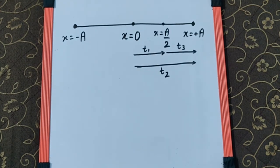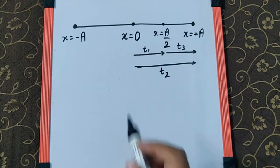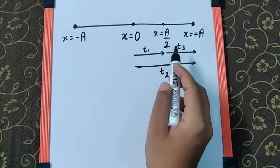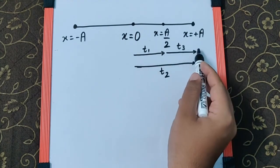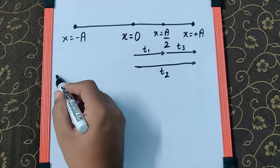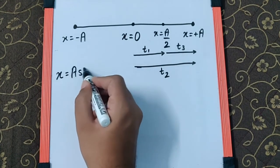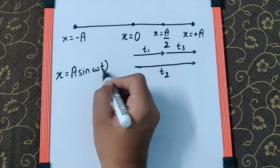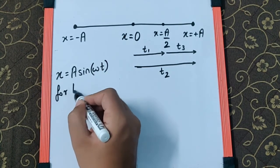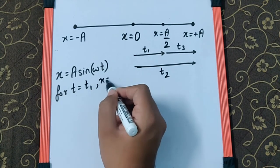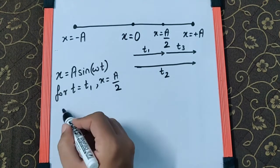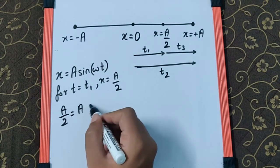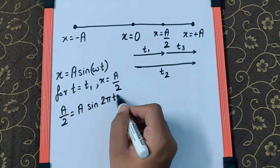Now let's find the time taken for a particle performing SHM to travel from 0 to a/2, from 0 to a, and from a/2 to a, in terms of the time period T. The equation for SHM is x = a sin(ωt). For time t₁, x = a/2, so substituting: a/2 = a sin(2πt₁/T).